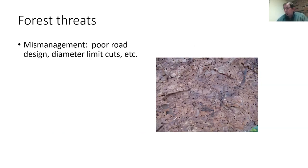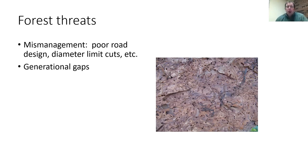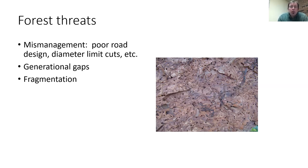Threats to the forest include poor management — wrong cutting practices, poor road and skid trail design leading to erosion. Generational gaps are a big threat: a grandfather spends years managing his forest sustainably, but doesn't convey that plan to his children and grandchildren, and all that work fizzles out. Fragmentation — more development and housing breaking up contiguous forest acres — is another significant threat.